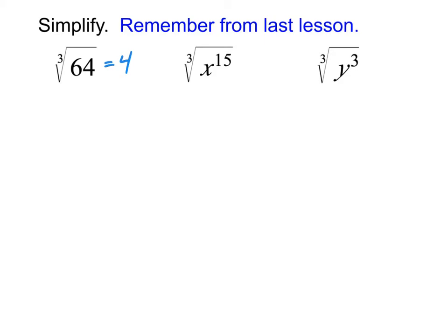And so that's why that one was 4. And then for the middle one here, we end up doing x to the 15 over 3, and 15 over 3 equaled 5. And then for this last one, we end up doing y to the power of 3 over 3, and 3 over 3 just equals 1. We don't need to write y to the 1, that's just y. And so those are values we found yesterday.